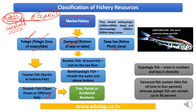Oceanic fish can be further classified by residency: true residents (always residing in the oceanic zone throughout their lives), partial residents (spending part of their life in other zones and migrating back and forth), and accidental residents (entering the oceanic zone by accident, such as due to water currents or movement of other fish).